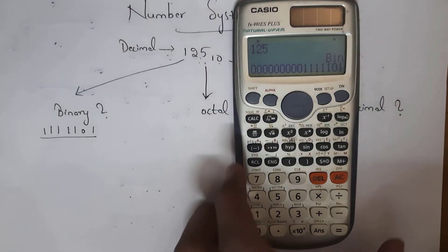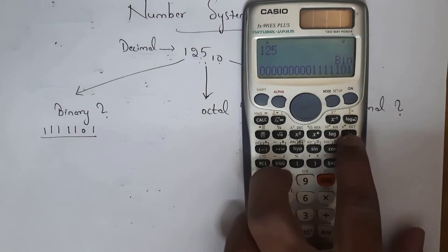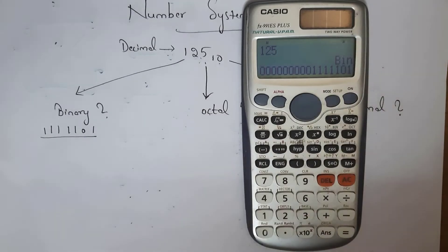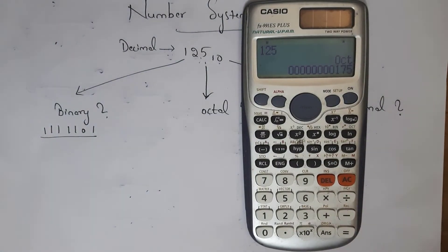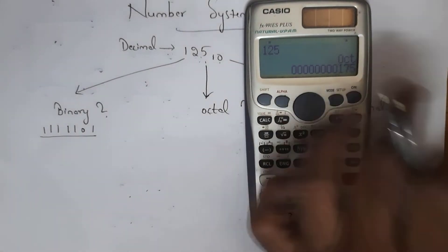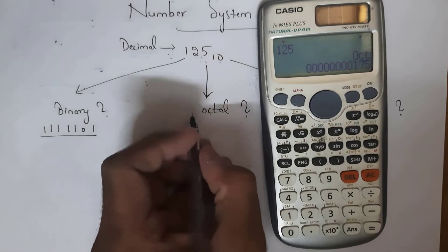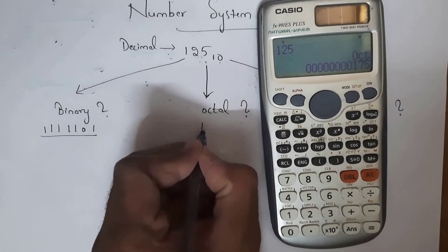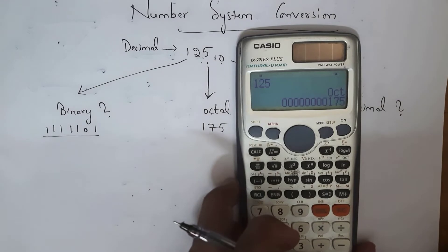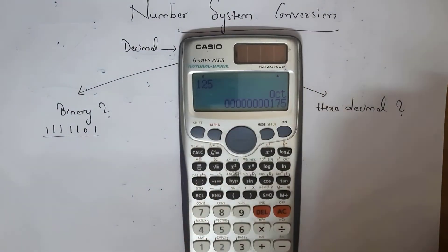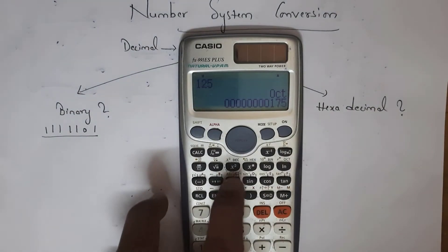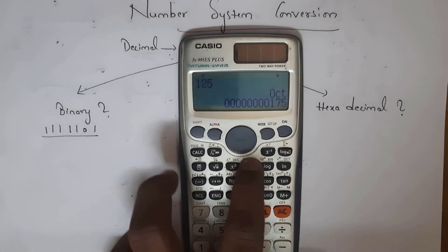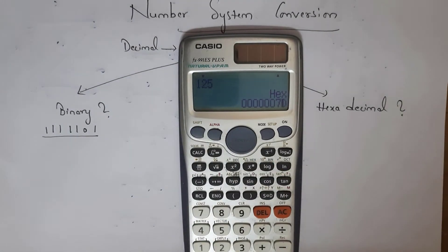To convert decimal 125 into octal, click the octal option — the answer is 175. To convert decimal 125 into hexadecimal, click the hexadecimal button — the answer is 7D. This is how we convert a decimal number into binary, octal, and hexadecimal.